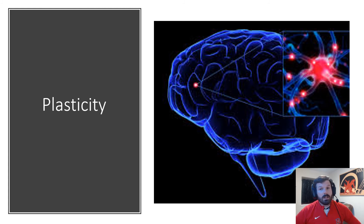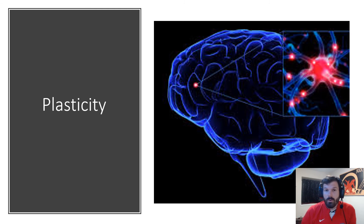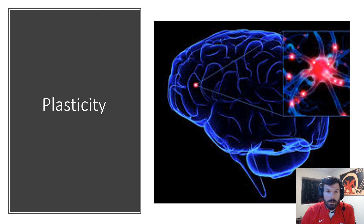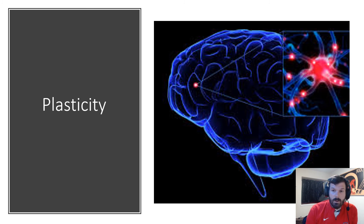Plasticity is most potent in children and in people below the age of 25, because the brain is still forming during that time. After 25, the brain's ability to change and reform slows down quite a bit.